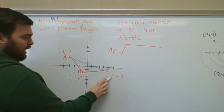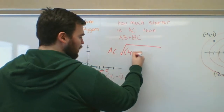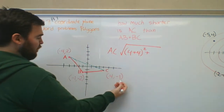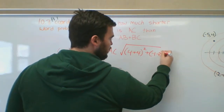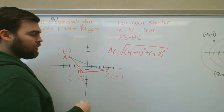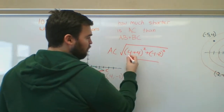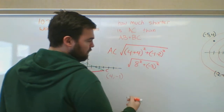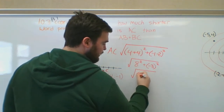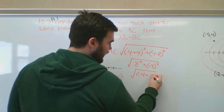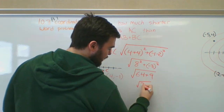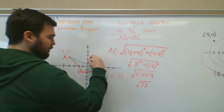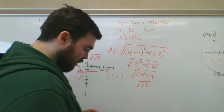For AC, I take the square root of (x₂ − x₁)² + (y₂ − y₁)². That's √((4 − (−4))² + (−1 − 2)²) = √(8² + (−3)²) = √(64 + 9) = √73. So AC = √73. I'll keep that in mind for now.